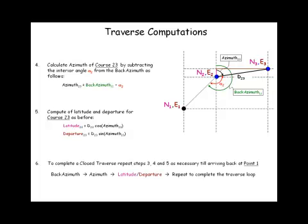We have to continue this sequence, repeating the previous steps 3, 4, and 5 until we arrive back to the initial point. And that will make a closed traverse.